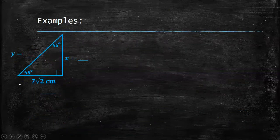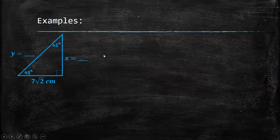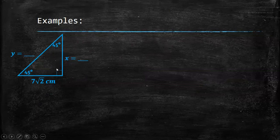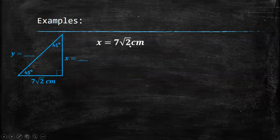Example 3: We have a given leg where x is equal to 7√2 centimeters. The missing values are the other leg and the hypotenuse. To find the other leg, since both legs are equal to each other, the other leg is also 7√2 centimeters.